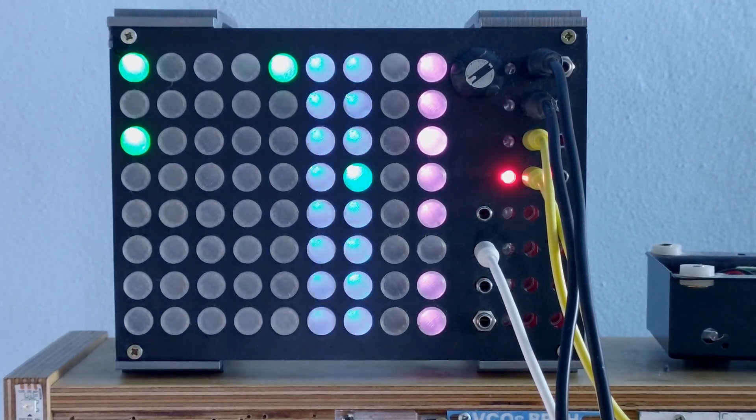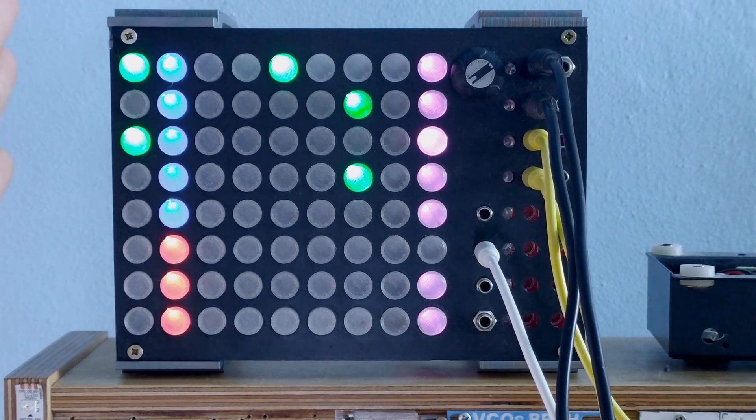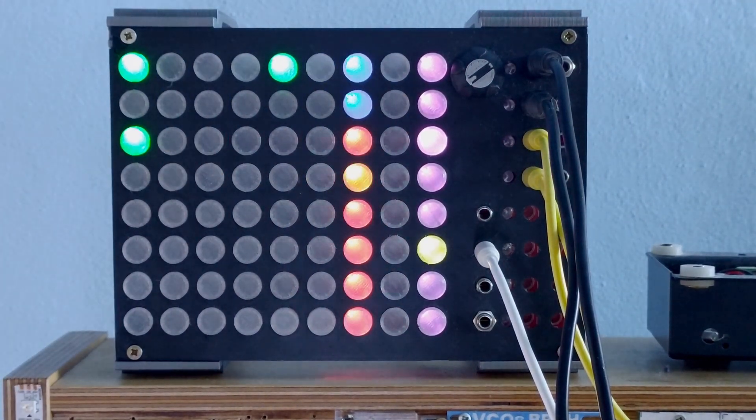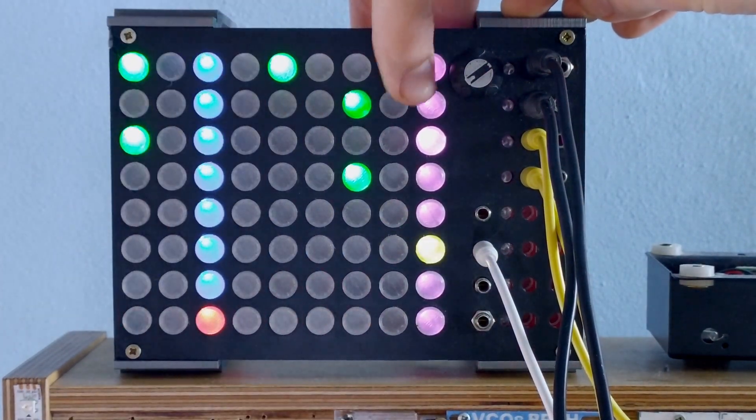You can also switch to 16 by, wait no, 64 step view because this is, you see eight steps of each channel. And you can switch to see 64 steps of one channel. You do that by pressing this button.